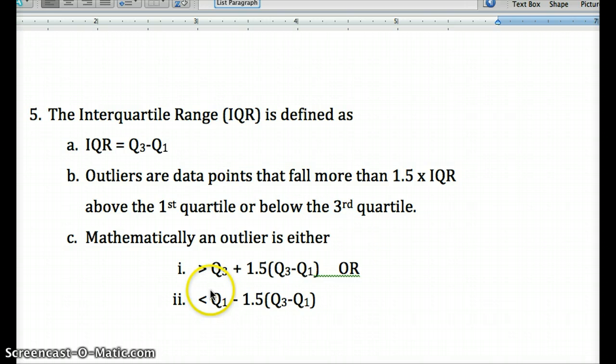So if we took the data Q3 and we added one and a half times the interquartile range and the number was bigger than that, it would be an outlier.